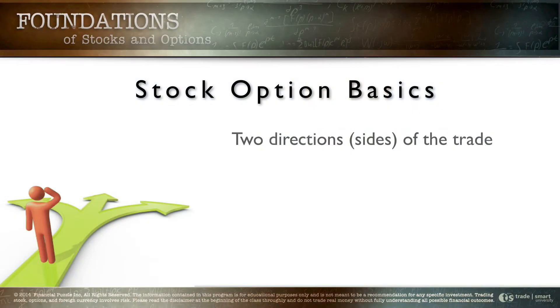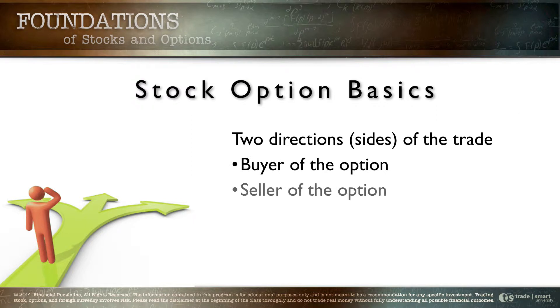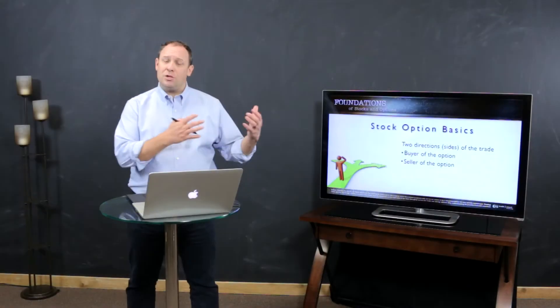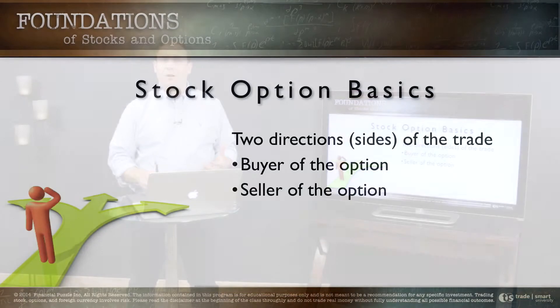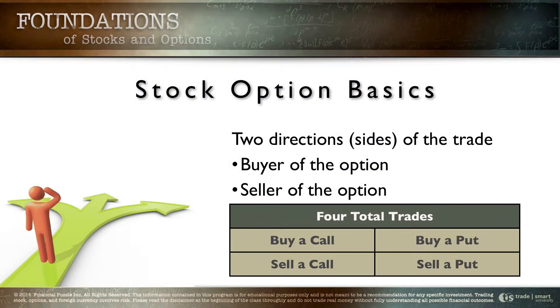Not only do we have two types of options, but we've also got two directions or two sides of the trade. We can have the buyer or we can have the seller. The buyer is buying the option and the seller is selling the option. If we combine the two types of options — the calls and the puts — with the two sides of the trade — the buyer and the seller — this gives us a total of four trades: you can buy a call, you can sell a call, you can buy a put, and you can sell a put. These four trades make up everything in the world of stock options.